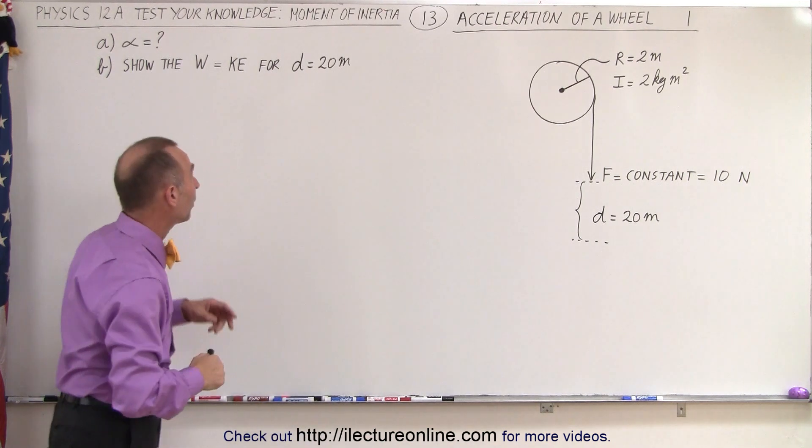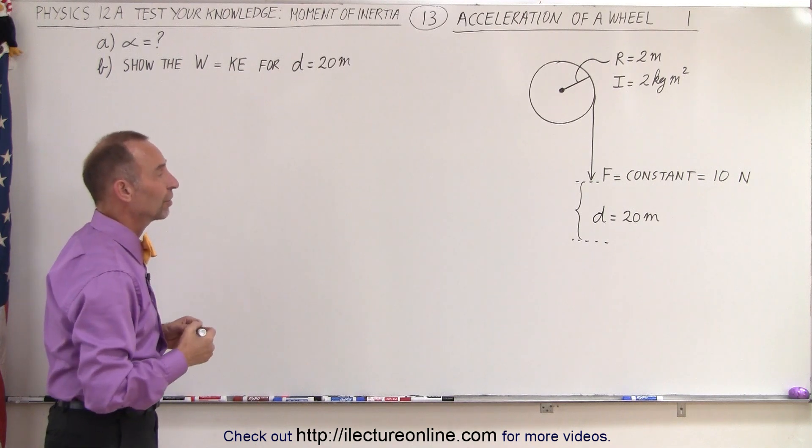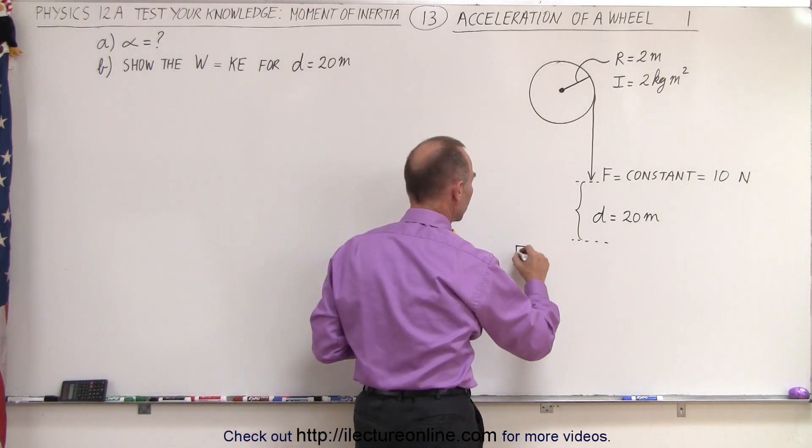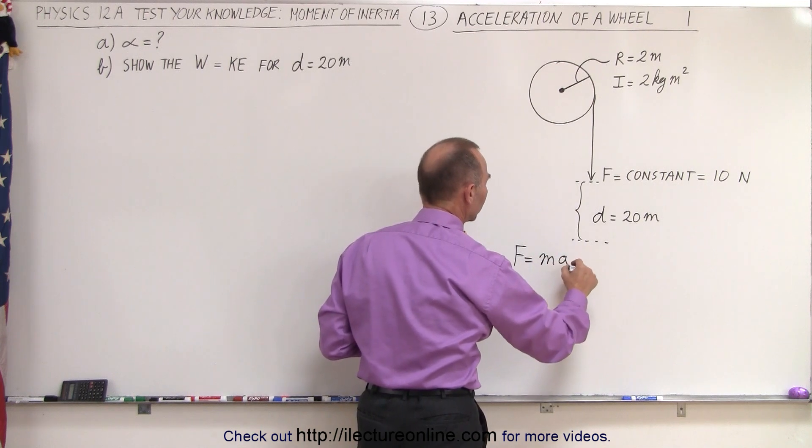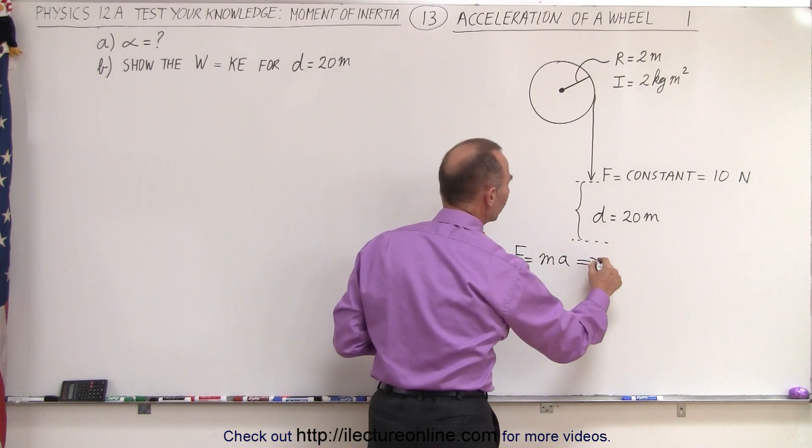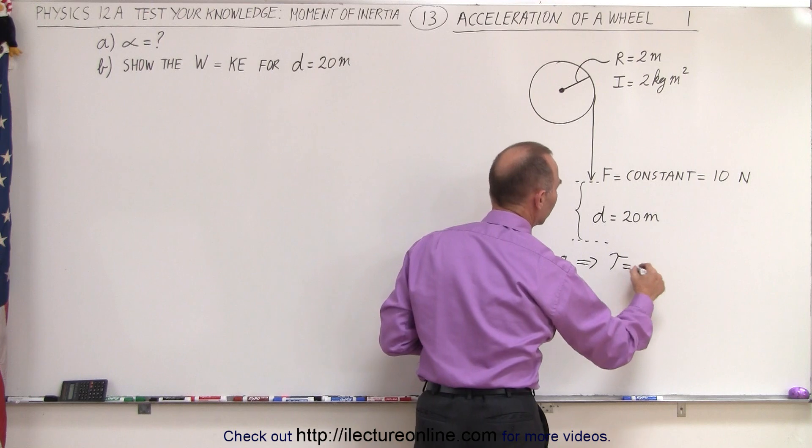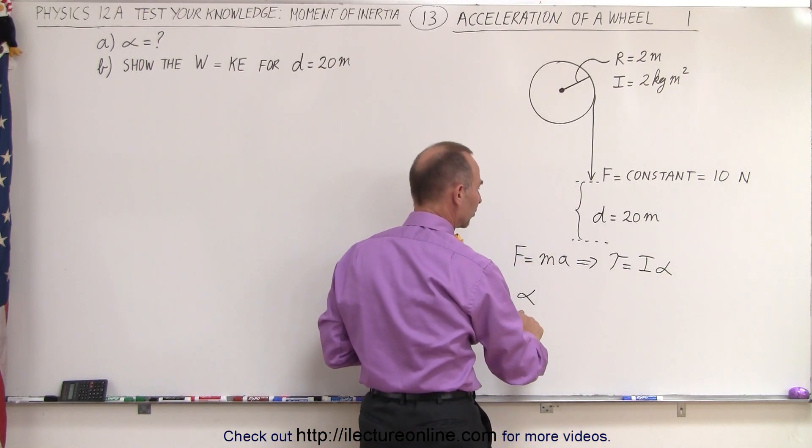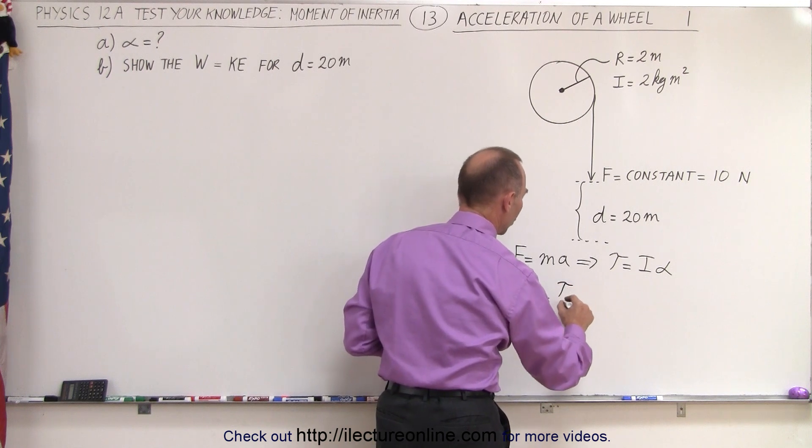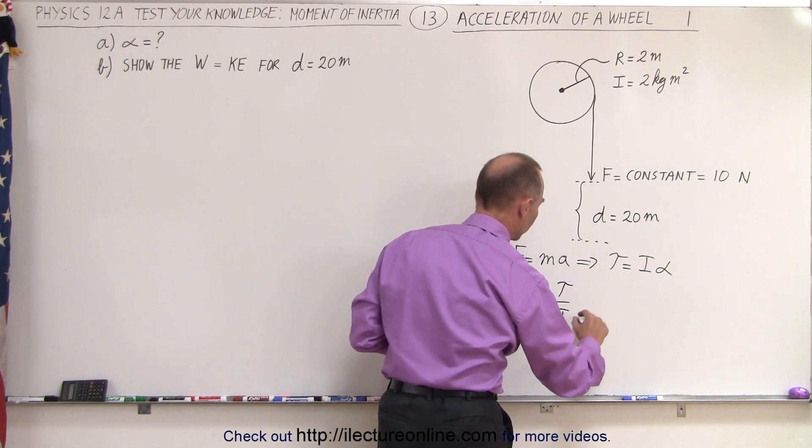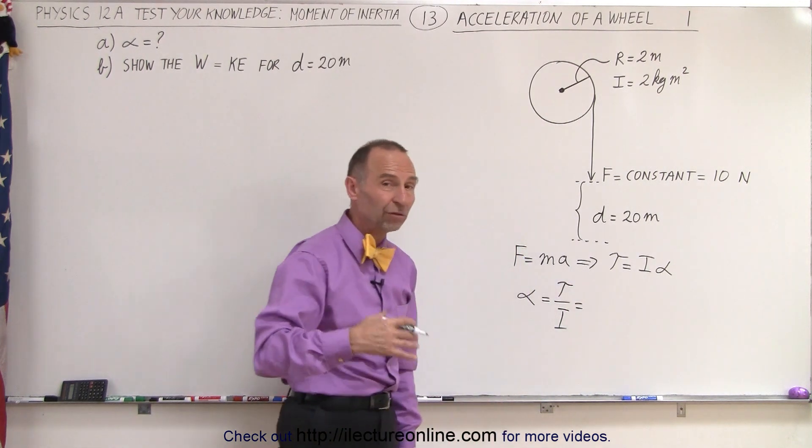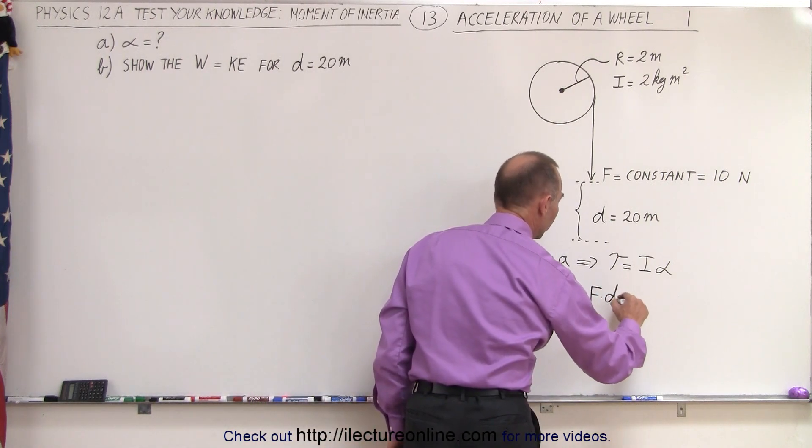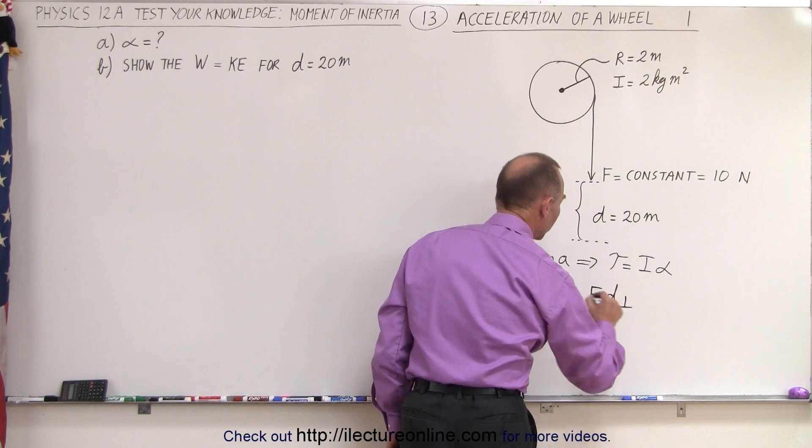So here, let's start with the first part. Let's find the angular acceleration. To find the angular acceleration, we're going to use the rotational equivalent of F equals MA, which means we're going to find torque is equal to I times alpha, which means that alpha, the angular acceleration, equals the applied torque divided by the moment of inertia. So the applied torque is force times perpendicular distance from the line of action of the force to the point of rotation.